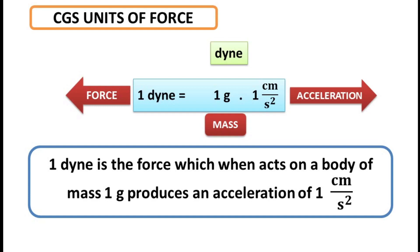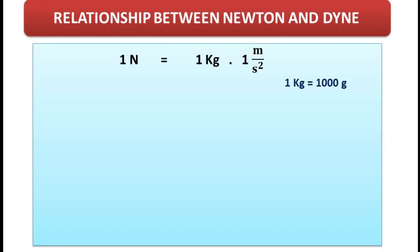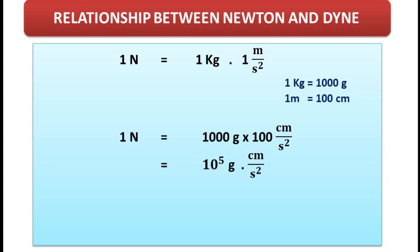Now the relationship between newton and dyne — a very important question but very simple. One newton equals one kilogram into one meter per second squared. One kilogram equals 1000 grams and one meter equals 100 centimeters. So one newton equals 1000 grams multiplied by 100 centimeters per second squared, which equals 10 raised to the power 5 gram centimeter per second squared. Since one gram centimeter per second squared equals one dyne, one newton equals 10 to the power 5 dynes. This is a very important question for board examinations.